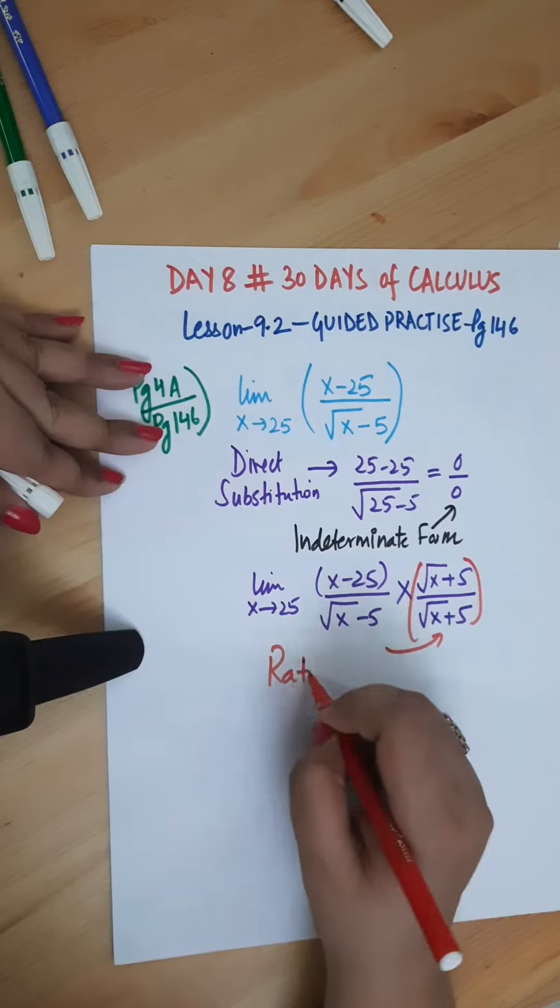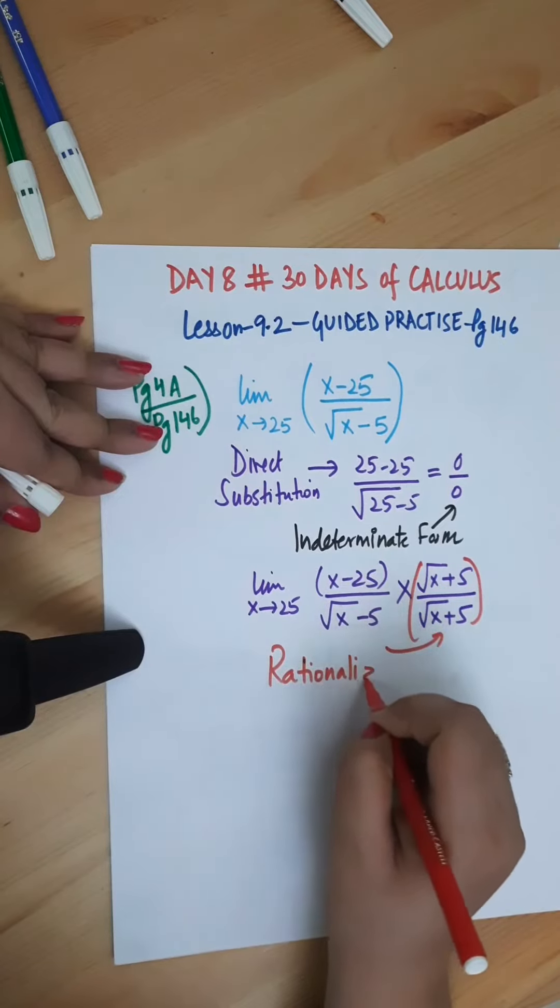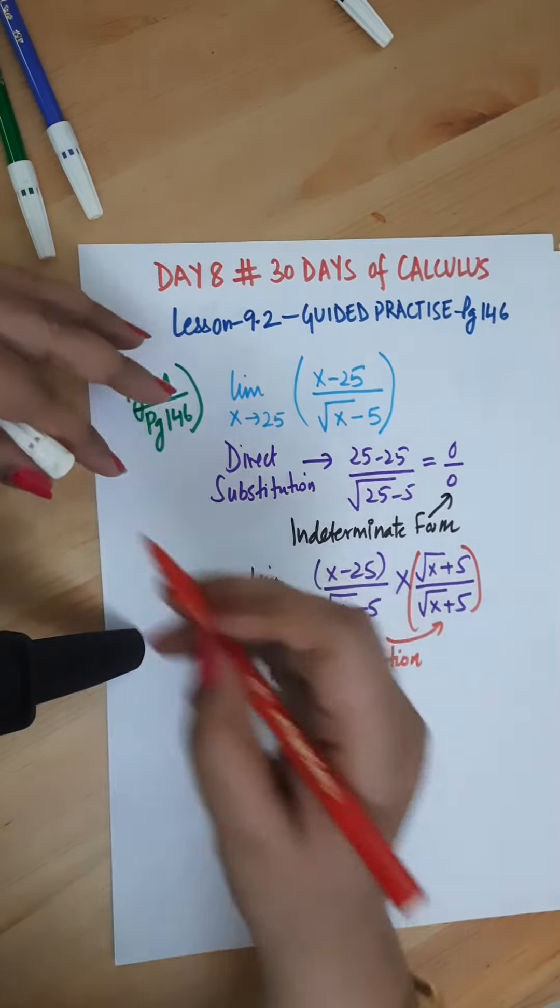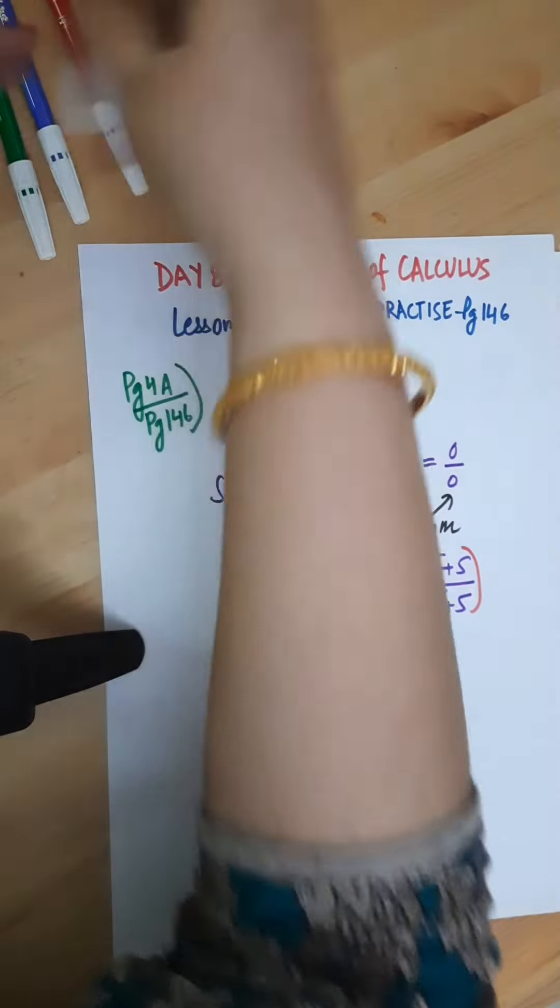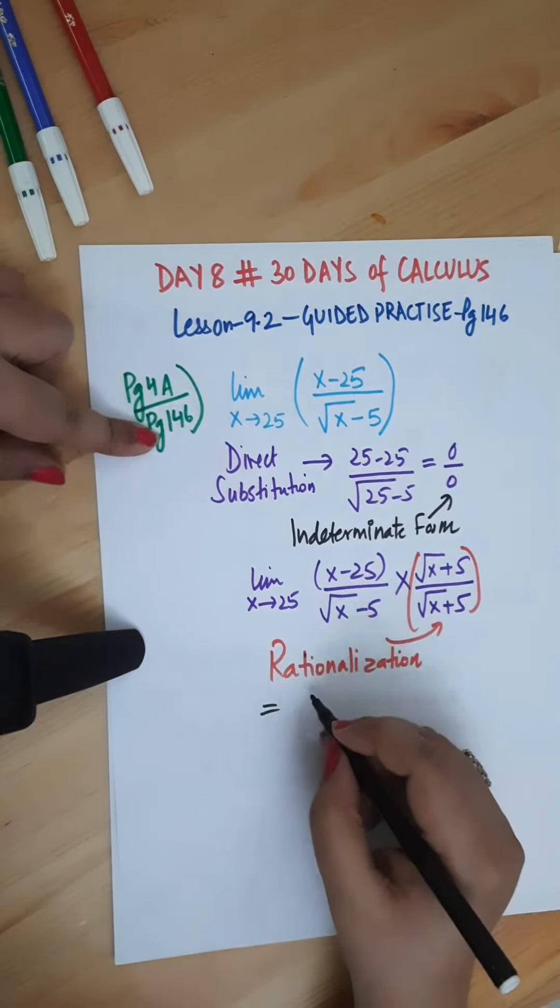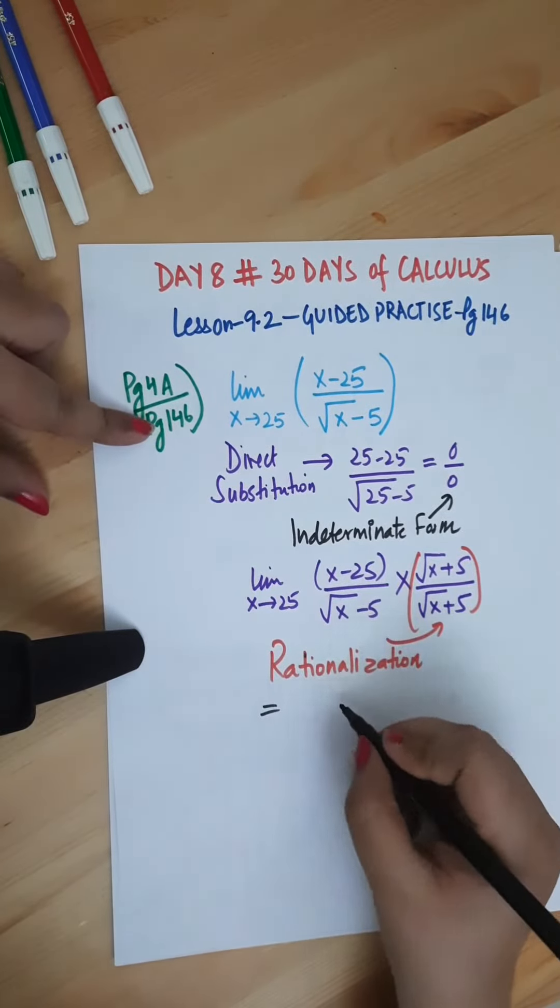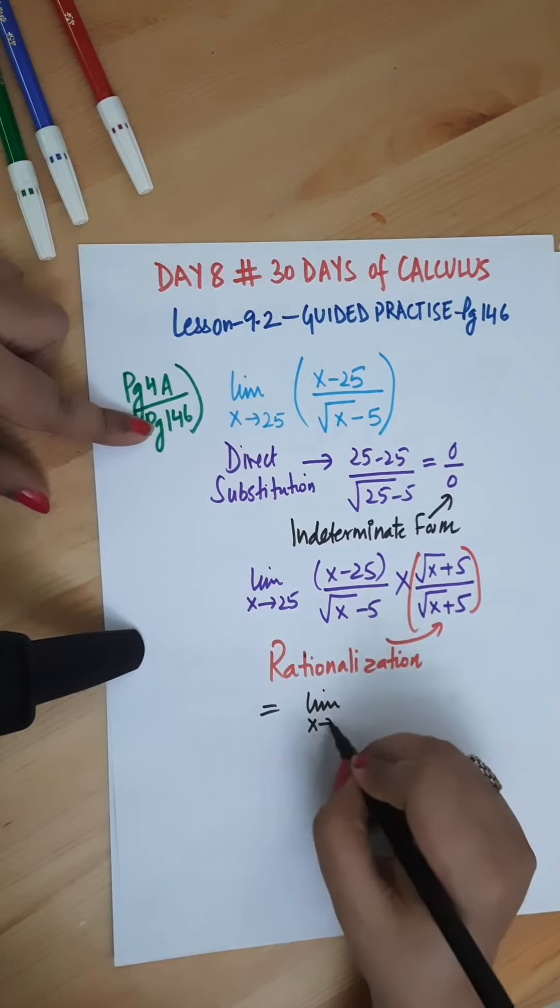So square root of x plus 5, multiplying that in the numerator and denominator. This process is called rationalization, and square root of x plus 5 is the conjugate of square root of x minus 5.